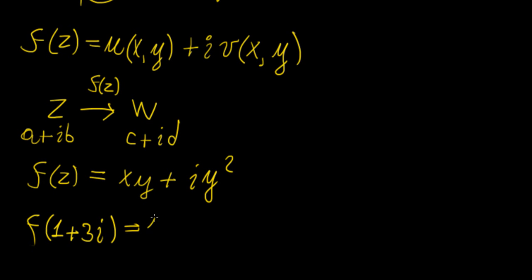Then what we would do is we would put a 1 where x is, and then a 3 where y is, and then we're going to get 3 squared like this. So that turns out to be 3 plus i9. So that's going to be the output.